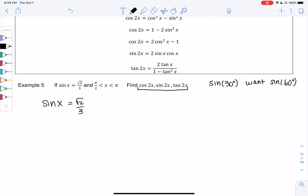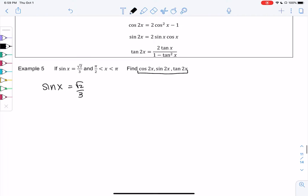So we don't just find sine of 30 and double it, we have to use formulas. We know that it's in the second quadrant from pi over 2 to pi.